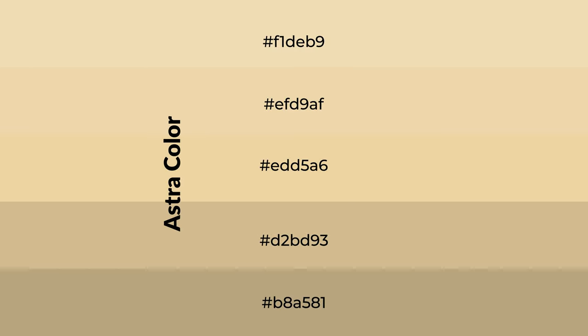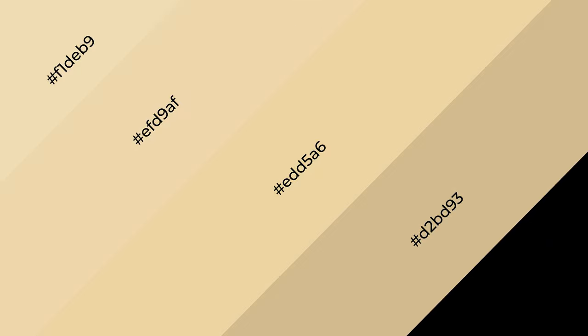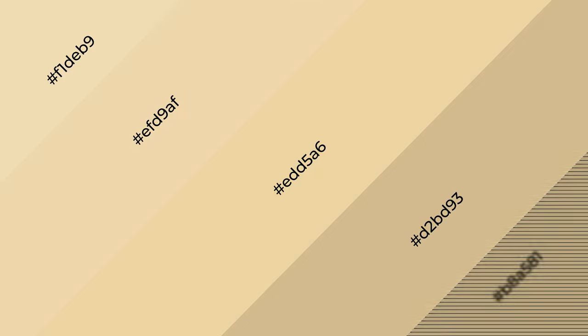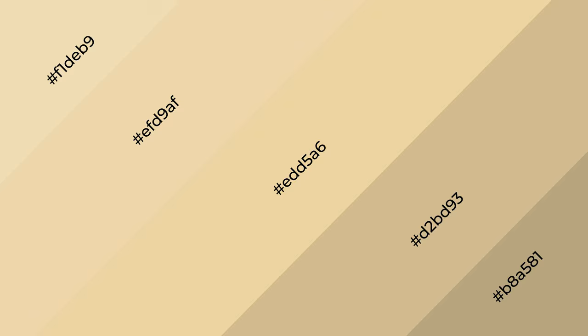To generate shades of a color, we add black to the color, and it is used in patterns and 3D effects. Layers and shades create depth and drama. Astra is a warm color and it emits cozier and active emotion.